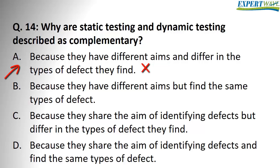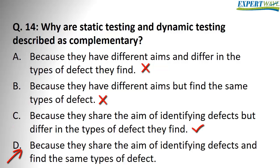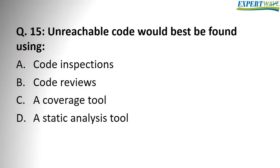Answer A is about 80% wrong. Answer B: because they have different aims but find the same types of defects — that's definitely wrong, they find different types. Answer C: because they share the aim of identifying defects but differ in the types of defects they find — that sounds correct. Answer D: because they share the aim of identifying defects and find the same types of defects — again wrong. So the correct answer is C.